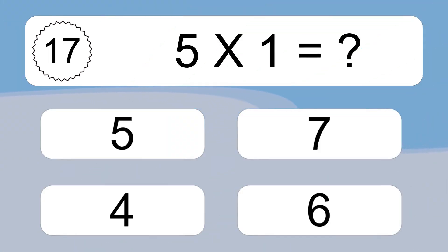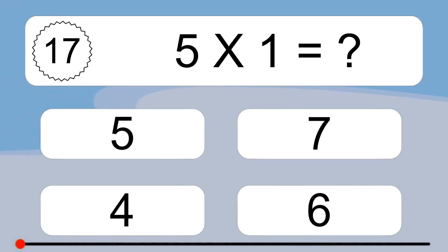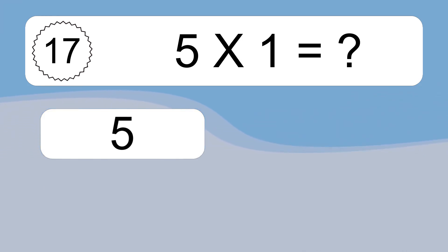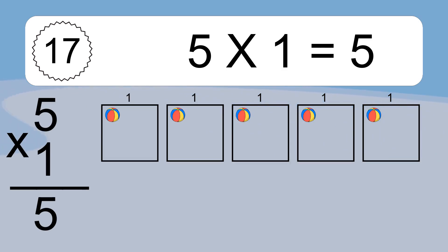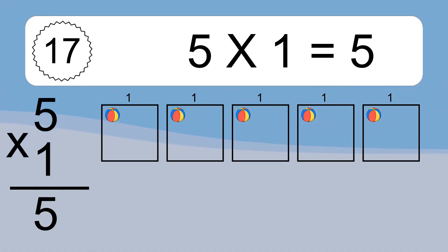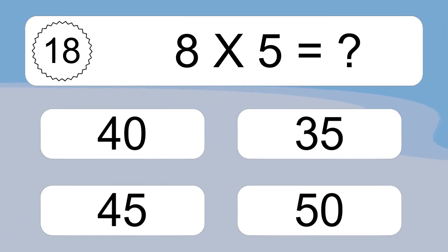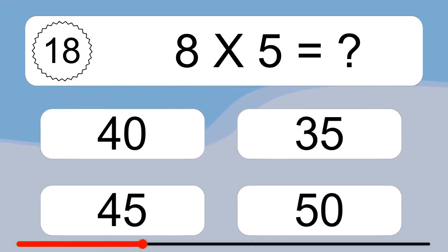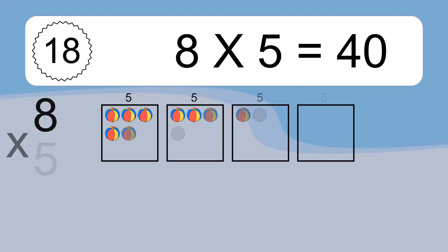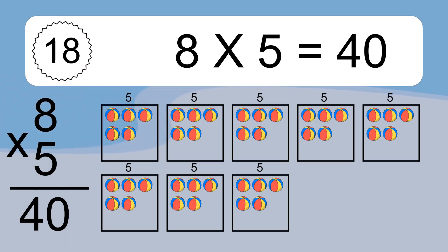5 times 1 equals what? 5 times 1 equals 5. We have 5 boxes, and each box has 1 colorful ball inside. If you count all the balls in all the boxes together, you will have 5 times 1 balls. This equals 5 balls. 8 times 5 equals what? We have 8 boxes, and each box has 5 colorful balls inside. If you count all the balls in all the boxes together, you will have 8 times 5 balls. This equals 40 balls.